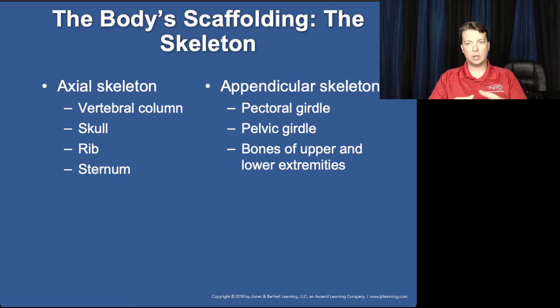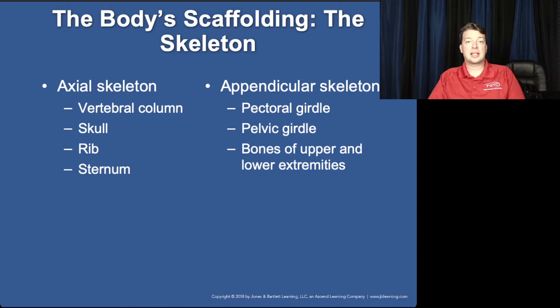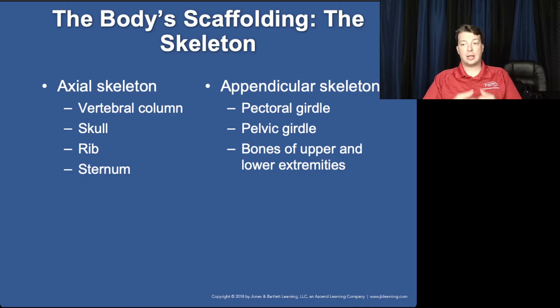When separating your skeleton: the axial skeleton is the center — the vertebral column, the skull, the ribs, and the sternum. That is all that is involved. The appendicular skeleton is everything that attaches to that. So your pelvic girdle, your pelvic bones — those are part of the appendicular skeleton. They are not part of the axial.